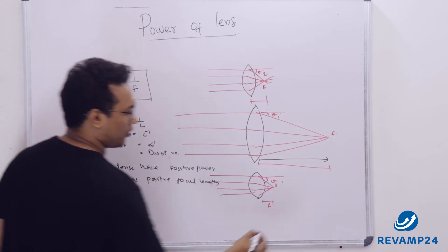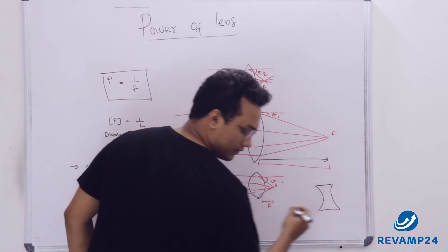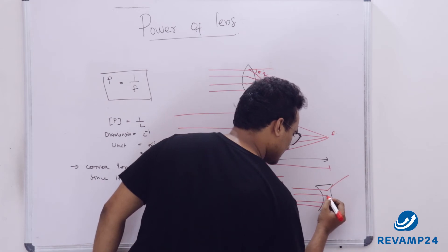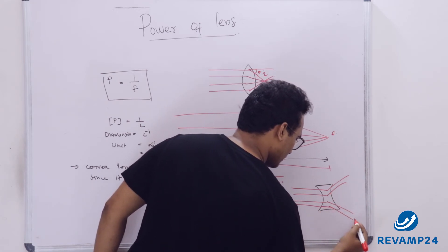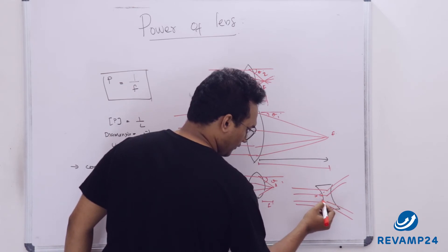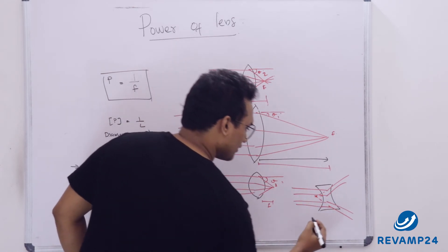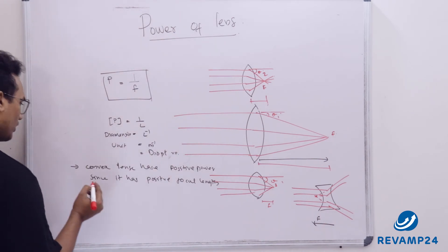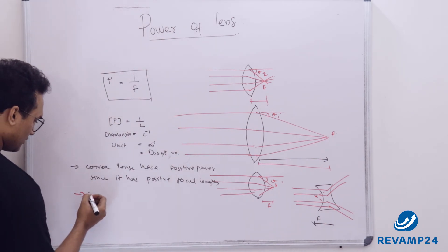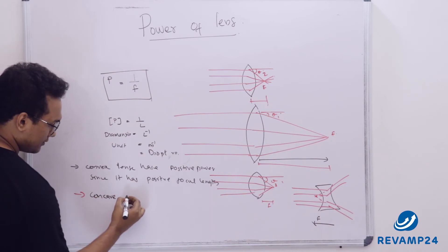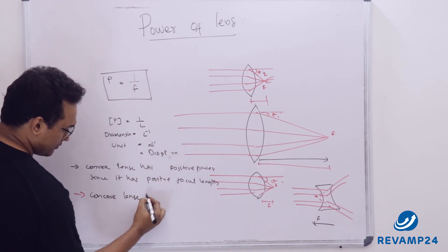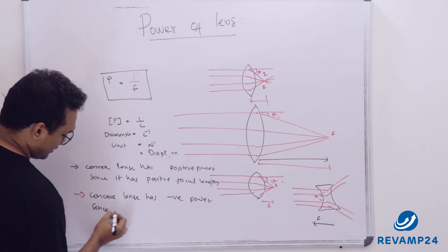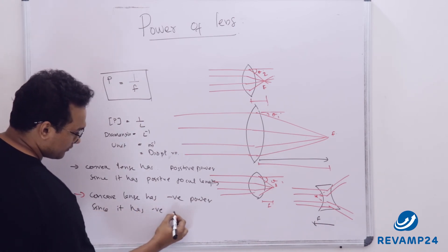But in the case of a concave lens, if parallel rays are coming, after refraction they diverge and appear to come from a common point. So the focal length is measured in the leftward direction, meaning focal length becomes negative. Therefore, a concave lens has negative power, since it has a negative focal length.